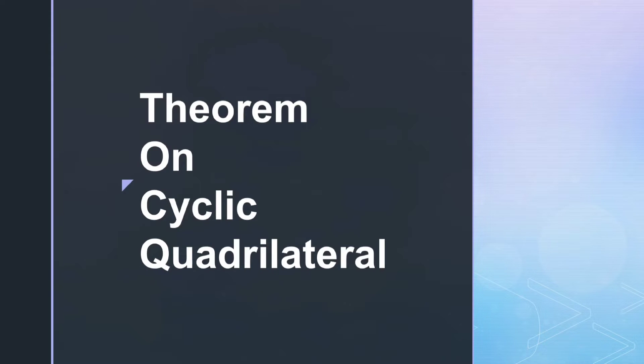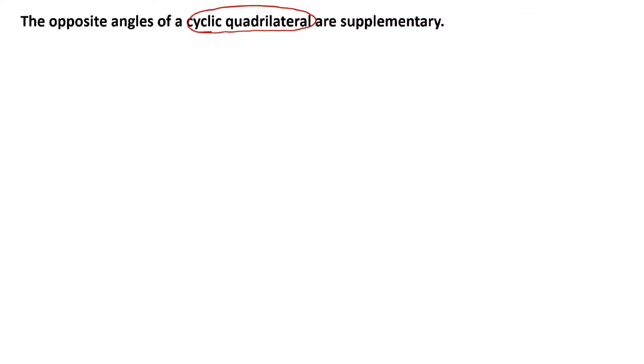In this video we will learn one important theorem on cyclic quadrilaterals. The theorem states that the opposite angles of a cyclic quadrilateral are supplementary. A cyclic quadrilateral is a quadrilateral having all its vertices on the circle.